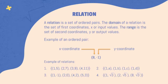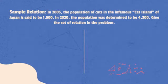To have a better picture of a relation, let's have some example. In 2005, the population of cats in the infamous Cat Island of Japan is said to be 1,500. In 2020, the population was determined to be 4,300.